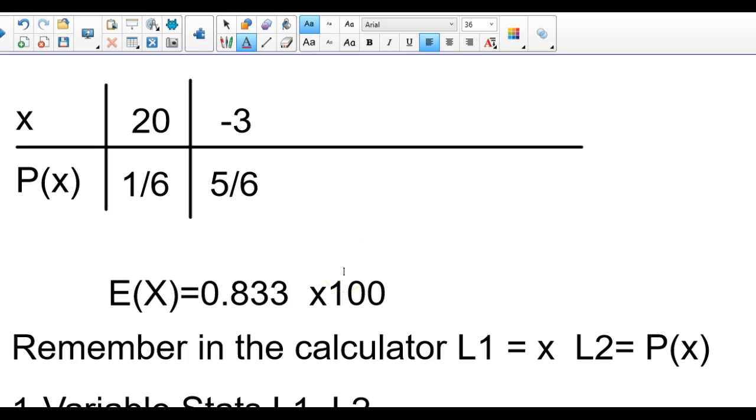On the formula sheet, which I don't have on my computer pulled up right now because I had to shut it down, there should be the term E of X on there. Look right now for your formula sheet. E of X, it should say E of X is equal to the sum, so sigma, of XI times P of XI, which means the observation times the probability of the observation.